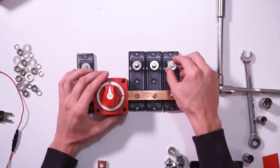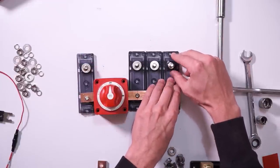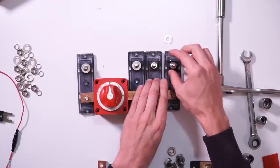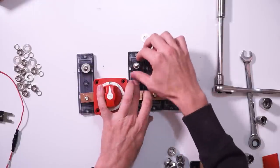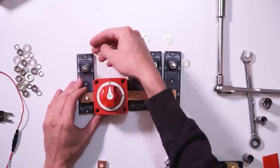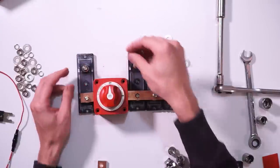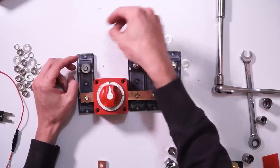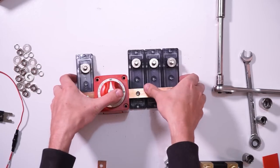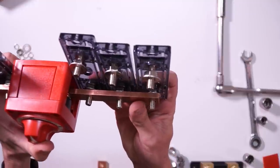So the next thing that we need to do is on these nuts right here, they actually need to come up off of the base of the fuse holder about halfway up the stud. This just makes sure our fuse stays nice and lined up. So you may have to use a wrench to pull these up, but they just need to spin up about halfway up this stud, like this.